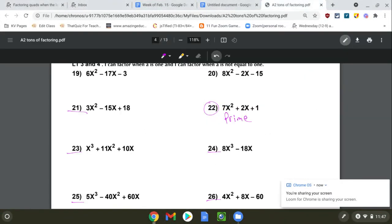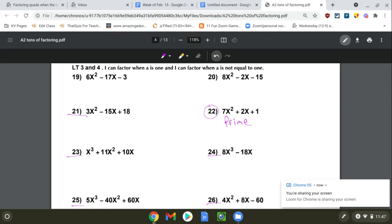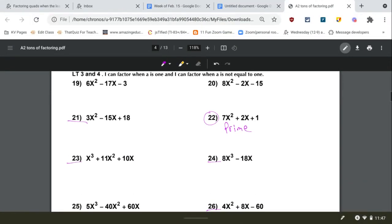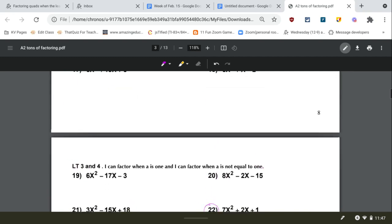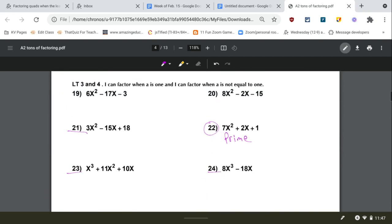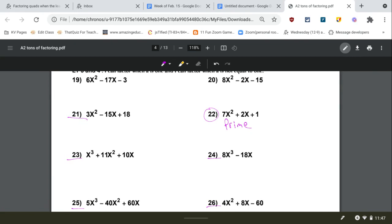Alright, I think this is page four. Yeah, page four. So on page four, it's really similar to that last page, page three, except you're going to be doing a lot of factoring out the GCF, starting with problem 21.